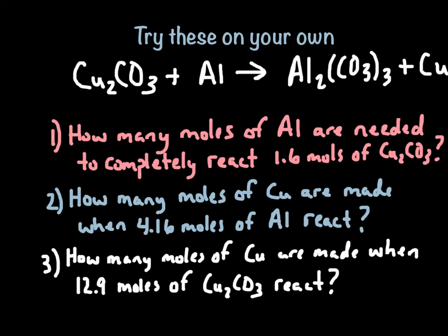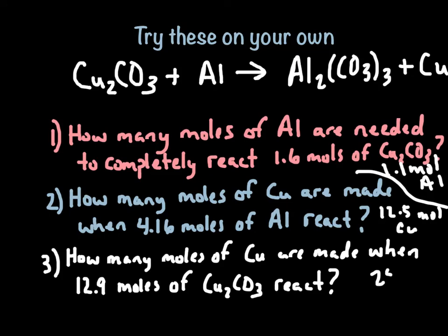If you stuck around, you get the bonus of seeing the answers. For the first one, I got 1.1 moles of Al. The second one: 12.5 moles of Cu. The last one: 25.8 moles of copper. If you're not getting those answers, you may not have balanced the equation correctly. You should have a 6 in front of copper, a 3 in front of Cu2CO3, a 2 in front of Al, an understood 1 in front of Al2(CO3)3, and a 6 in front of copper. Have a great day.